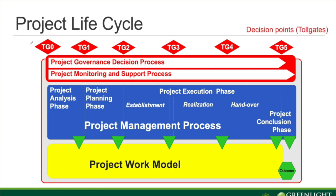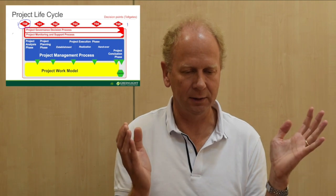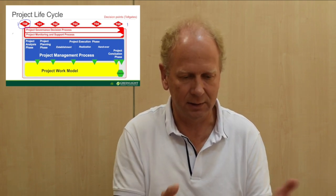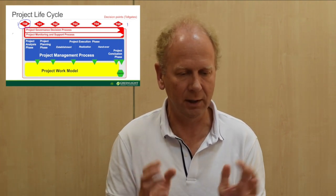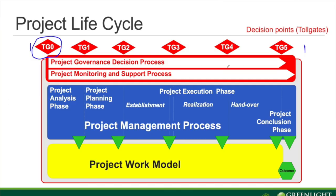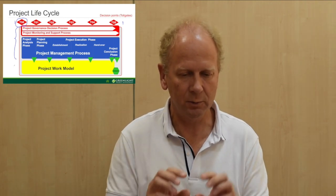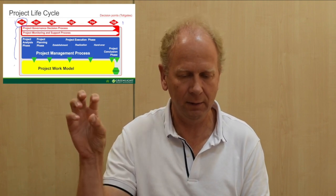This is the project lifecycle again. Here you can see target zero and target five. Target zero is a decision we make to start up something — it could be a very formal decision or less formal. Then we divide all processes into the three levels: red, blue, and yellow. The red and the blue parts are basically always the same, independently of what type of project we are running, because we need to decide, govern, and manage the project on the steering level.